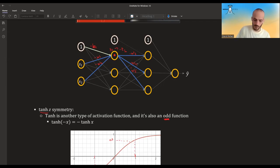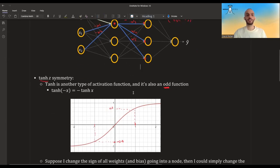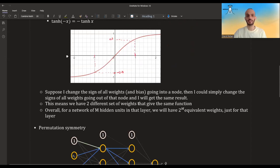So before we had that this node over here got z1 times w3, now it's getting minus z1 times minus w3, but this is equal to z1 times w3. And the same will happen to this node over here and to this node over here. So this is a symmetry. This is what I mean by symmetry.